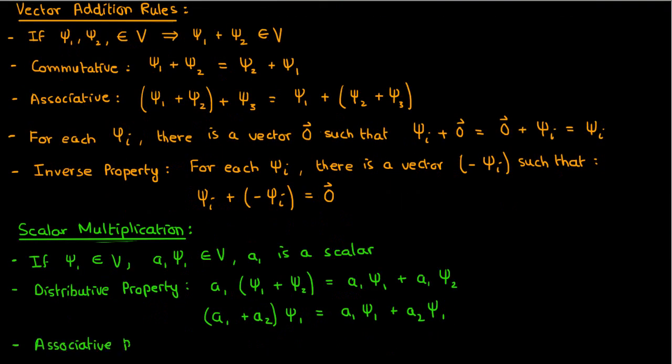Scalar multiplication must also be associative, so if I'm multiplying two or more scalars by a vector I can multiply all the scalars together and then multiply the vector or I can multiply the scalars separately.